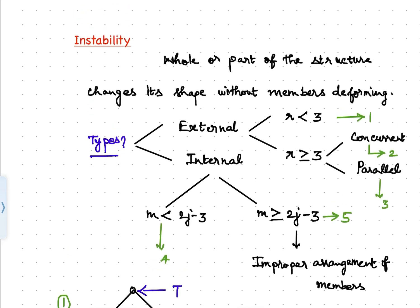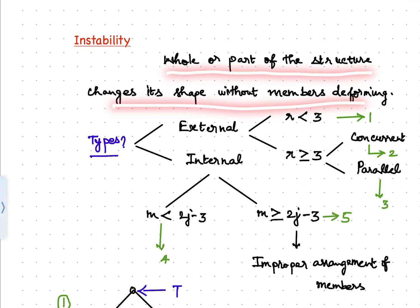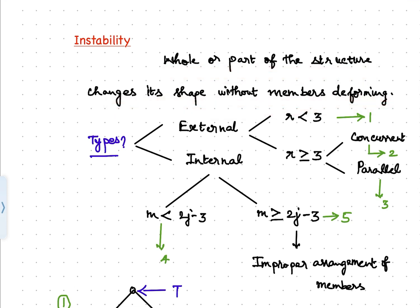We will define instability. Instability is the structure's tendency to change its shape without some or all of its members undergoing a change in length. To put it otherwise, if the whole or part of a structure changes its shape without members deforming, it causes instability. Similar to the way we categorize indeterminacy, instability is classified as external and internal.